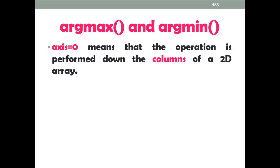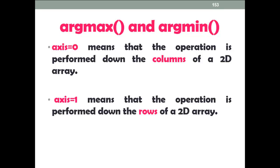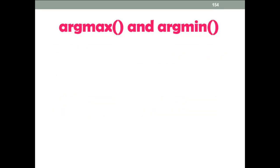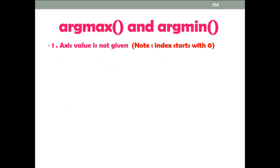In a multidimensional array we can pass axis values either 0 or 1. Axis 0 means that the operation is performed down the columns of a 2D array. Axis 1 means the operation is performed across the rows of a 2D array. Here you can see that the axis value is not given.